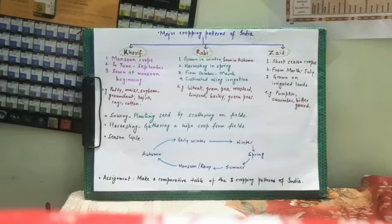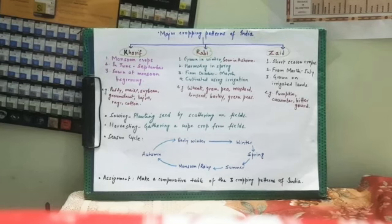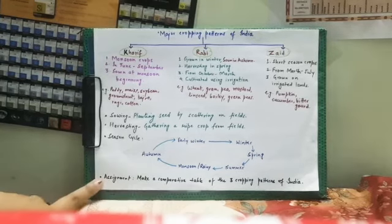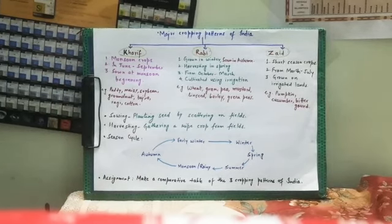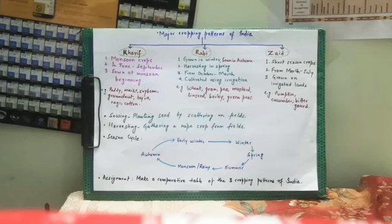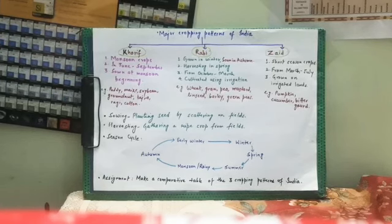That was all about the cropping patterns. There is a small assignment for all of you to do in your notebook: make a comparative table of the three cropping patterns of India, including their examples, their seasons, their sowing and harvesting time, and their names.